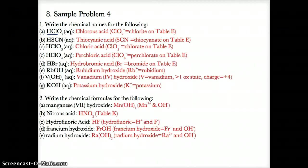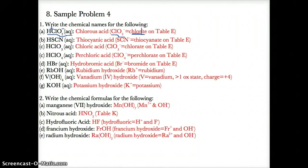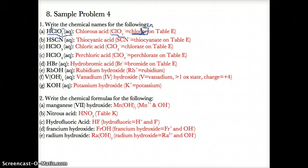For HClO2, breaking it apart: H+ in front followed by ClO2- in the back. Looking on table E, ClO2- is chlorite. Since it's a polyatomic ion with the -ITE ending, you cross out the -ITE and replace it with -OUS acid to name the acid, since the -ITE ending always gets -OUS. We name it chlorous acid.